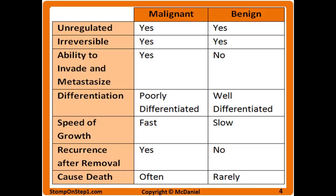Here's a table outlining the differences between malignant and benign. Both involve unregulated cell growth and are irreversible. Malignant can metastasize; benign cannot. Malignant is poorly differentiated while benign is well differentiated. Malignant tumors tend to grow fast while benign tumors grow slowly or not at all. Malignant tumors often recur even after removal, while benign tumors rarely reoccur after surgical removal. Malignant cancers can often cause death while benign cancers rarely cause death.